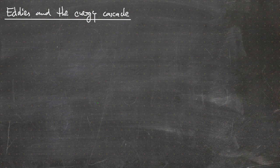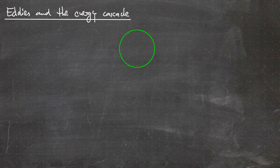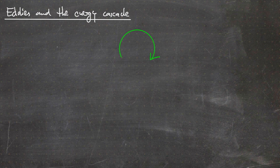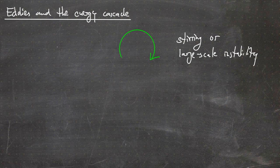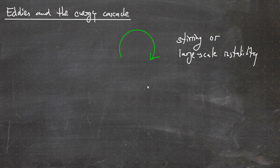Let's assume we start with some large eddy by either stirring a large tank or having a large scale instability. So let's draw one large eddy. This is supposed to be an eddy. We start here — starting by either stirring a fluid in a large tank or by having some large scale instability. What then happens is what you have probably seen in the photographs, simulations — this large scale eddy...